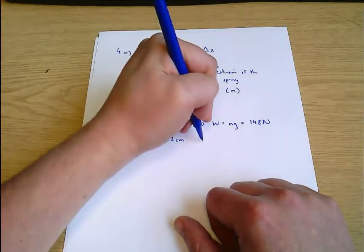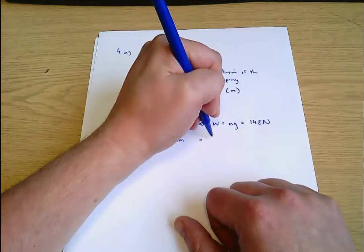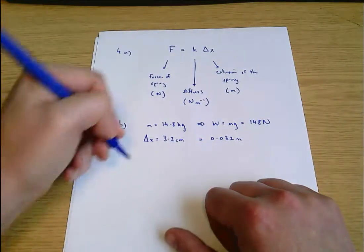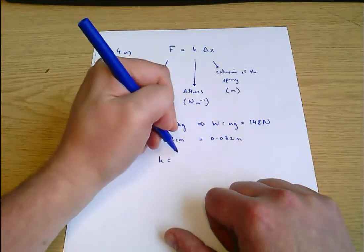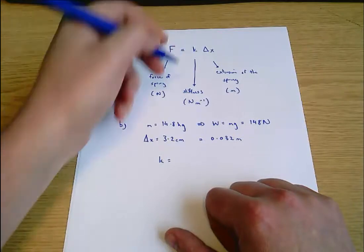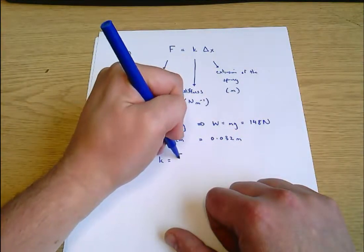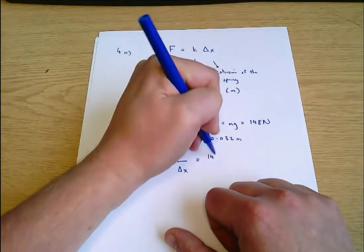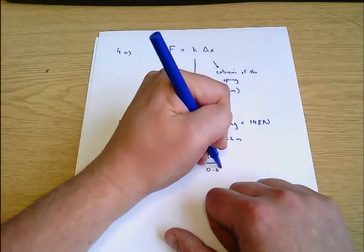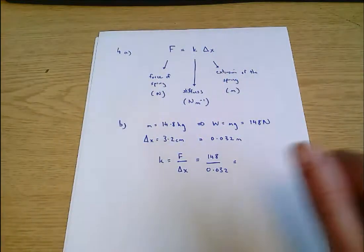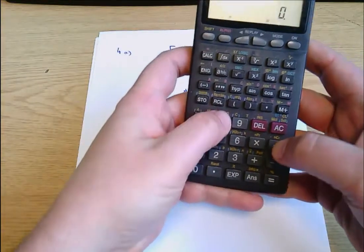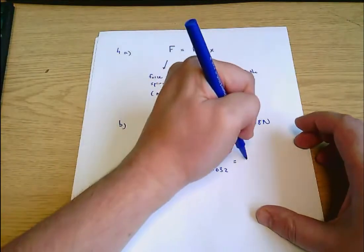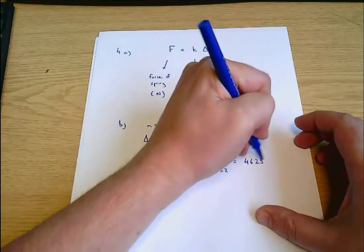And I'll say as well 3.2 centimeters is 0.032 meters. And we already said the stiffness dividing both sides of this equation by delta x. The stiffness is F over delta x. Which equals 148 over 0.032. Which equals 4625 newtons per meter.